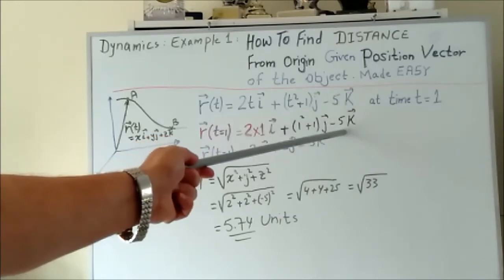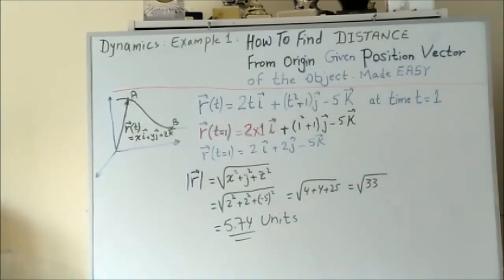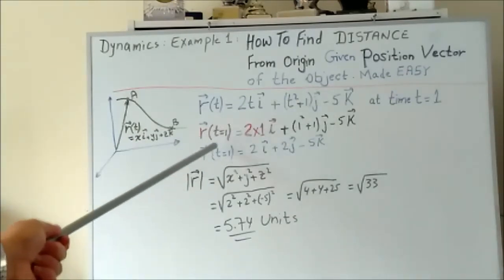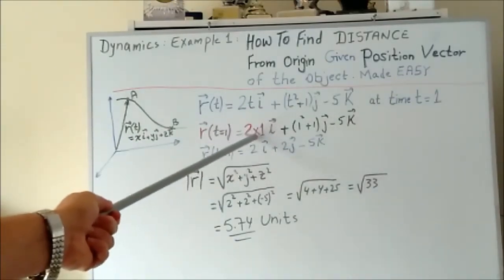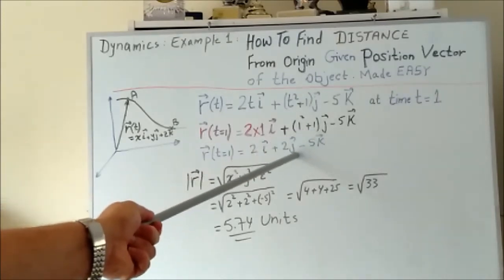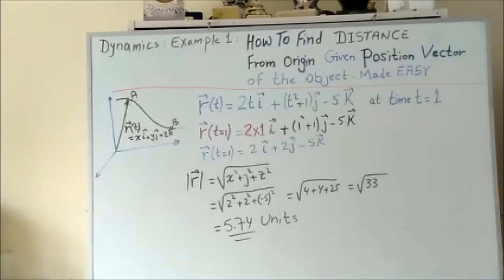The z component, as we can see, doesn't depend upon time—there is no t in the z component. So by simplifying, r(1) equals 2i + 2j - 5k.